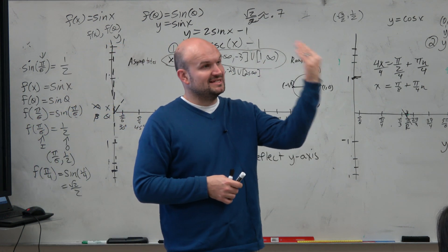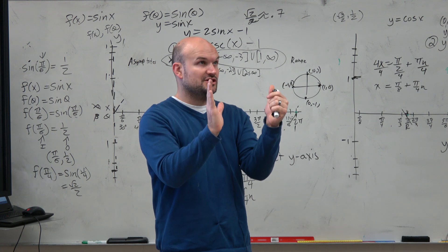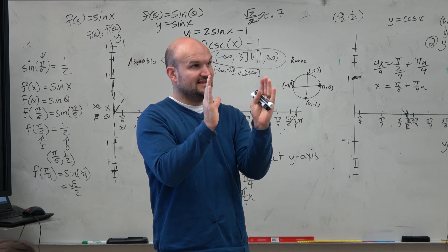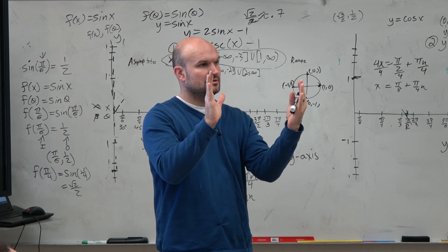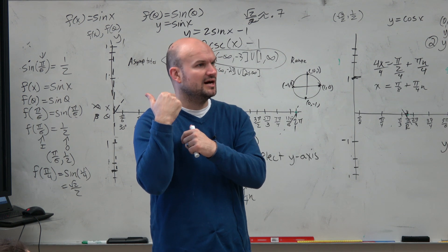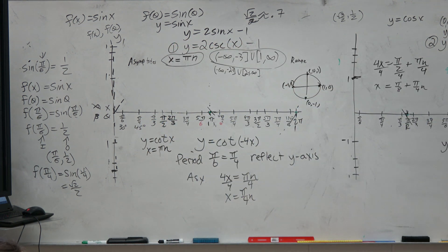Negative is just going to be reflecting it. But if you look at the reflection of the cotangent, that's not going to change the asymptotes. And I'll show you that on the graph on Desmos. And the other thing to remember about period, period is never negative.